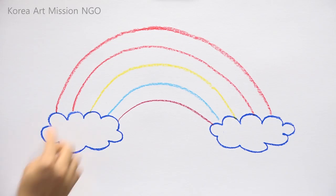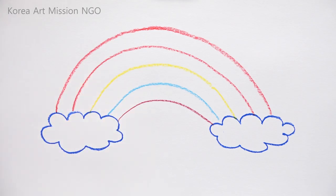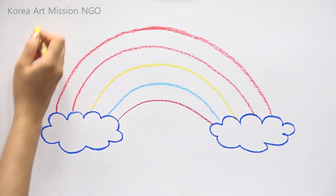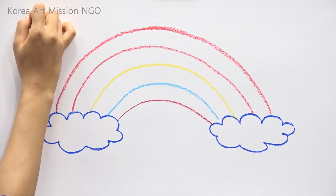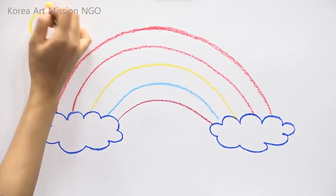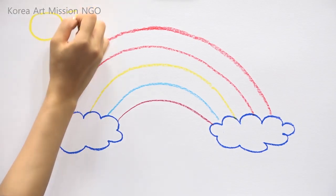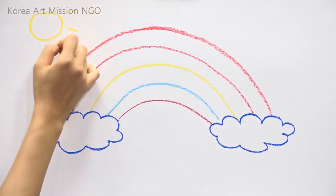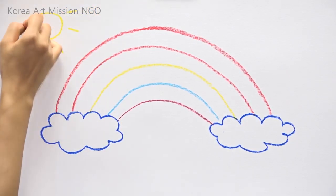And then I will draw purple here at the bottom part. In Korea, we know that there are seven colors in the rainbow: red, orange, yellow, green, blue, indigo, and violet. But this time, I will draw it with just four colors. Draw four lines like this.